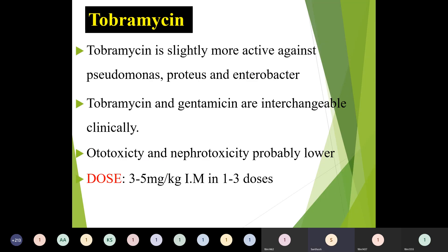The next drug is tobramycin, which is slightly more effective against Pseudomonas, Proteus, and Enterobacter. Tobramycin and gentamicin are clinically interchangeable. Ototoxicity and nephrotoxicity are probably lower compared to other drugs. The dose is 3 to 5 mg per kg body weight intramuscularly in 1 to 3 doses.